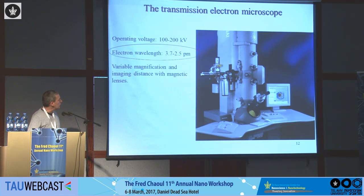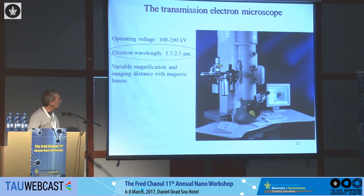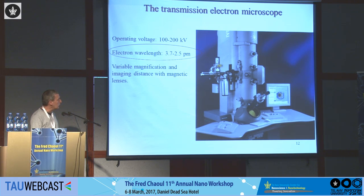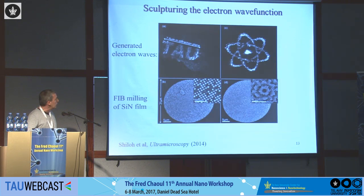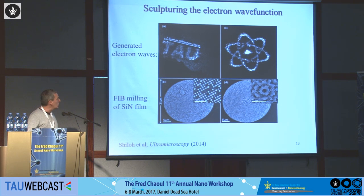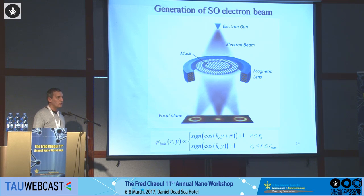All these experiments are done inside an electron microscope. The gun is at one end, the masks are inserted in the middle, and a camera records the images. The nice thing about the electron microscope is that the wavelength is very small — only a few picometers. This is just to show the capabilities of shaping electron beams. Now let's go back to super-oscillation and implement it for electron optics.